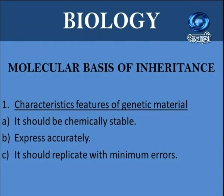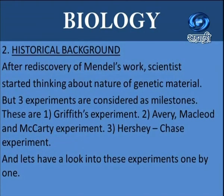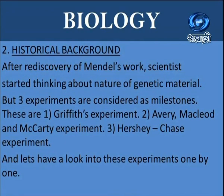Genetic material should be chemically stable, it should express accurately, and it should replicate with minimum errors. To understand this, we have to see the historical background of how we reached molecular basis of inheritance. After the rediscovery of Mendel's work, scientists started thinking about the nature of genetic material. Three experiments are considered as milestones: Griffith's experiment, Avery McLeod and McCarty's experiment, and Hershey and Chase experiment.